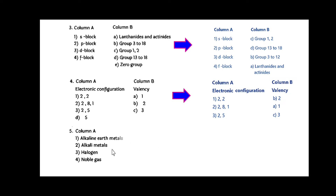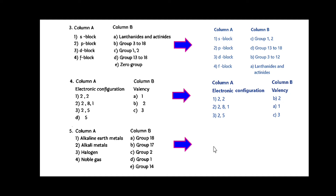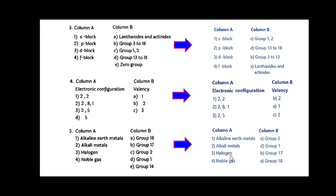Fifth question: different classifications of elements are given — alkaline earth metals, alkali metals, halogen, and noble gas from the modern periodic table. Column B gives different groups: group 18, group 17, group 2, group 1, and group 14. The match is: alkaline earth metals — group 2, alkali metals — group 1, halogen — group 17, and noble gas — group 18.